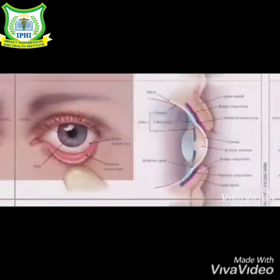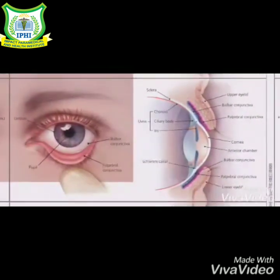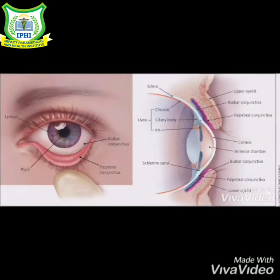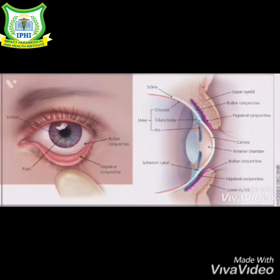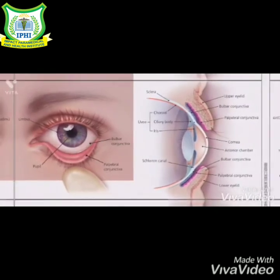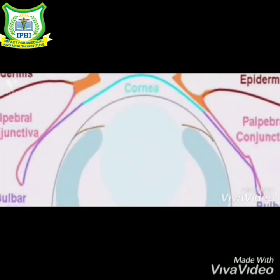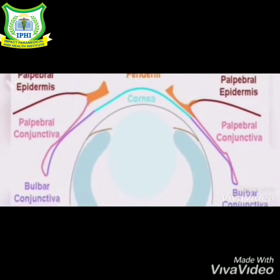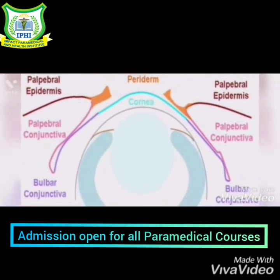The conjunctiva is a translucent mucous membrane which lines the posterior surface of the eyelids and the anterior aspect of the eyeball. It stretches from the lid margin to the limbus and encloses a complex space called the conjunctival sac, which is open in front at the palpebral fissure.